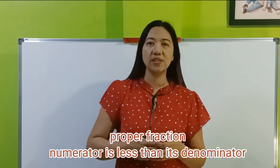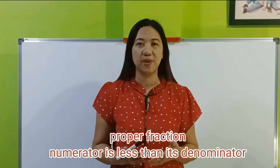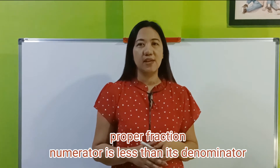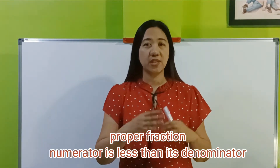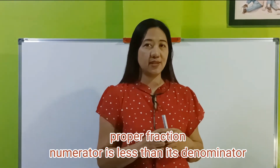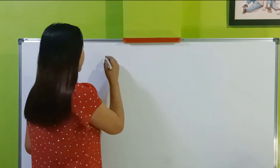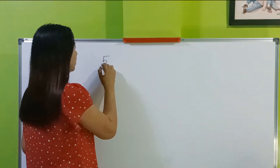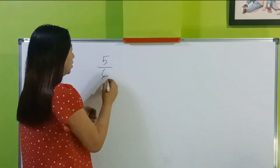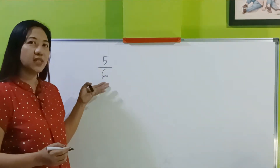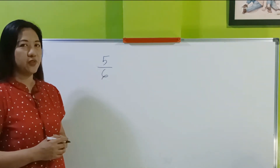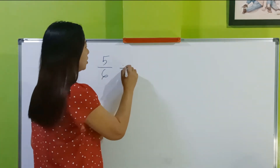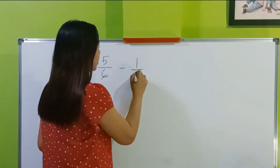Let's start with division of proper fractions. What is a proper fraction by the way? A proper fraction has a numerator which is less than its denominator. Example, 5 sixth. So 5 is less than 6, so this is an example of a proper fraction. So how are we going to divide these fractions?